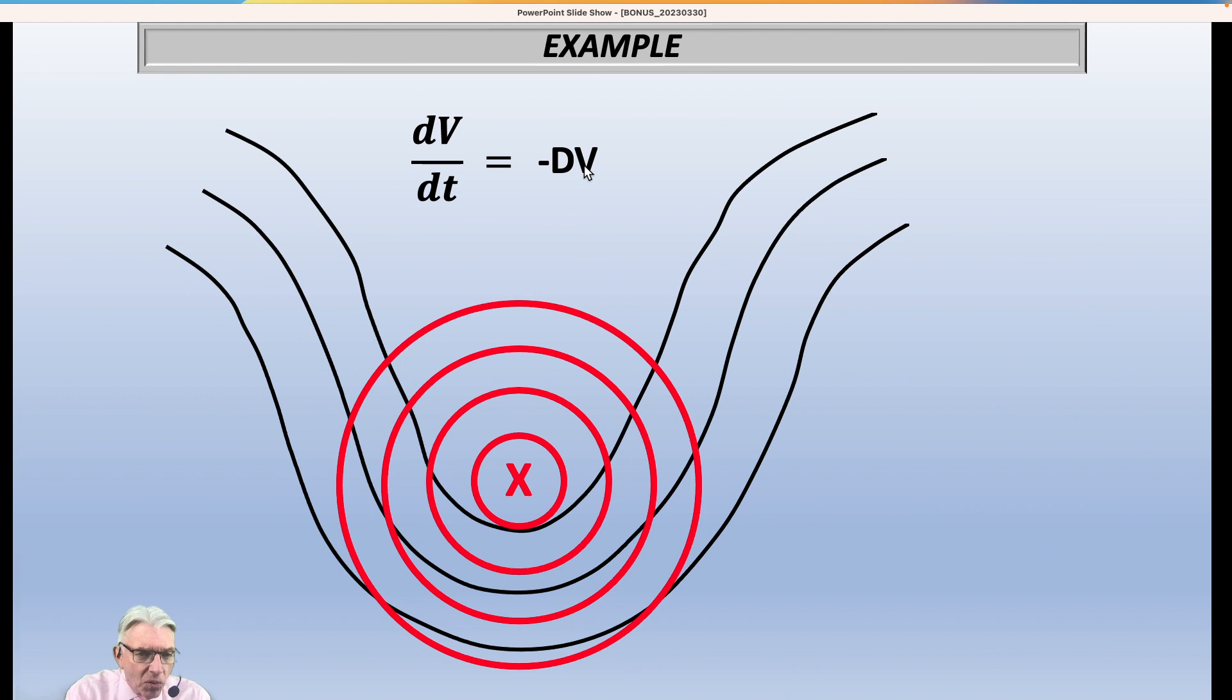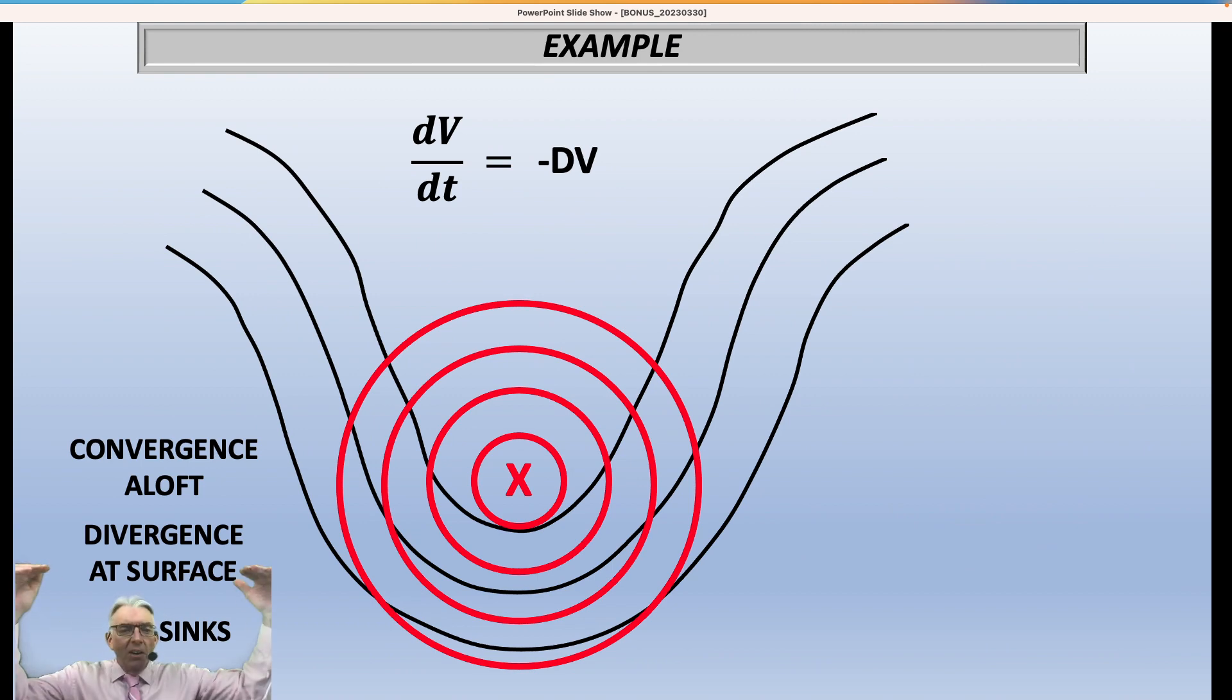So if this side of the equation is positive, that means this side needs to be positive. Well, we know the vorticity is positive already and we had a minus sign here. So the only way we can make that side of the equation positive is to make the D negative. So if you have negative divergence, that is the equivalent of convergence. So we have convergence aloft. We have divergence at the surface. So the air sinks. So you have air coming together at the top of the atmosphere, sinking and then spreading out at the bottom. And that's usually associated with fair weather, clear skies, not a whole lot going on.